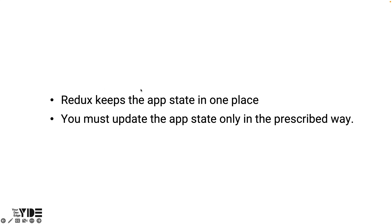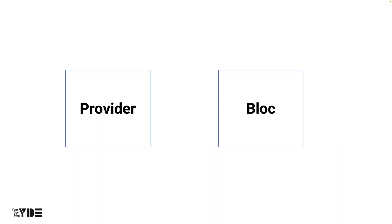In summary, Redux puts the app state in one place and you must update the app state only in a prescribed way. Because the state must be updated only in a certain way, no matter who writes it, the code related to state management is almost the same, which increases the readability and predictability of the code. In the case of Provider, a tool to manage the state is provided, but it does not provide a rule on how to manage the state. Therefore, if you do not create guidelines for state management, there is a high possibility that code between team members will be inconsistent.